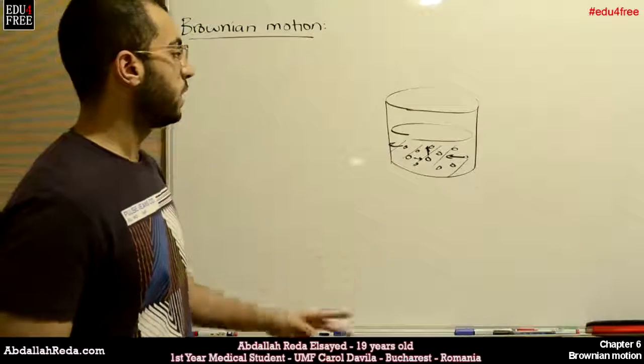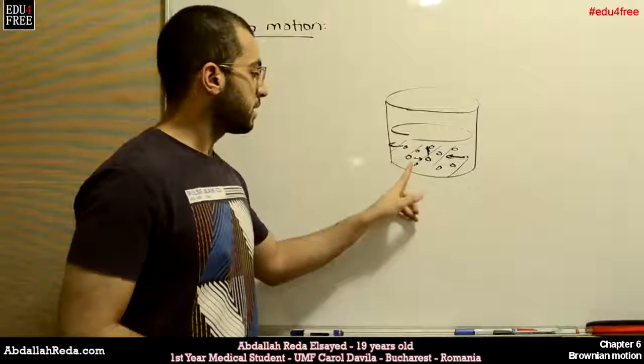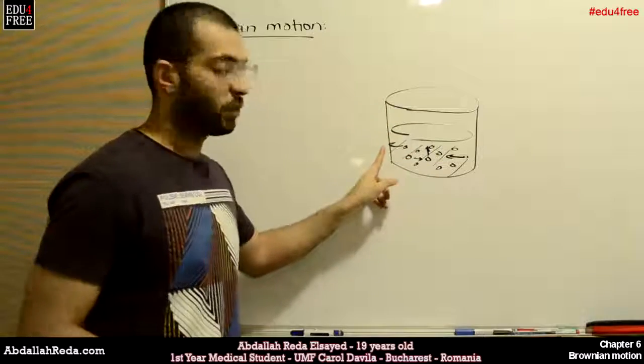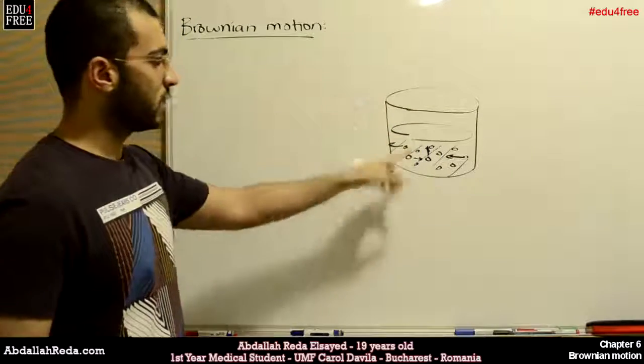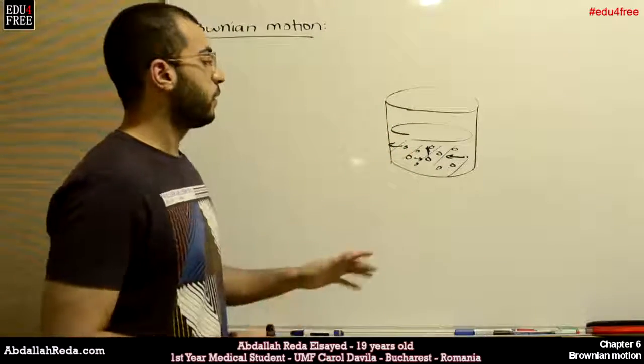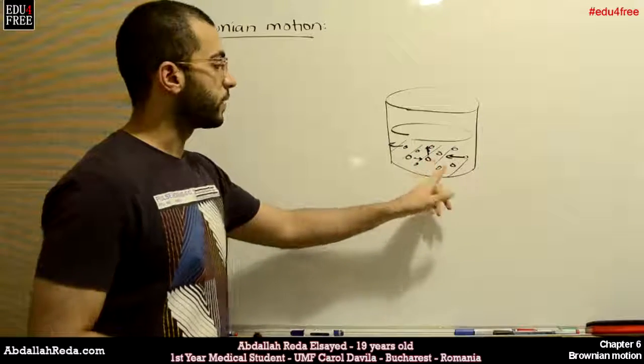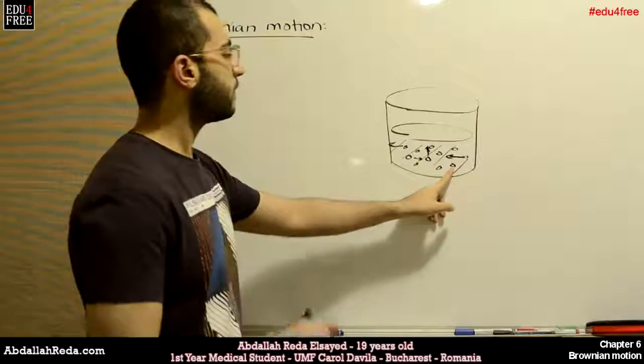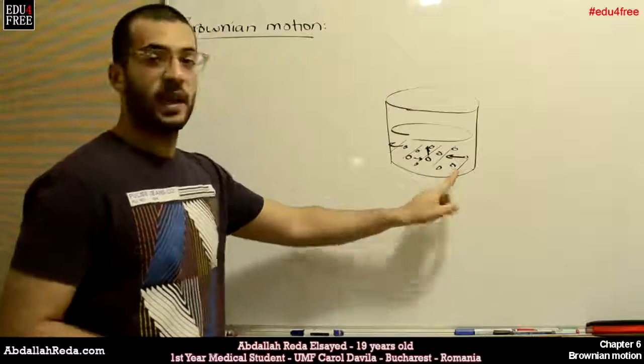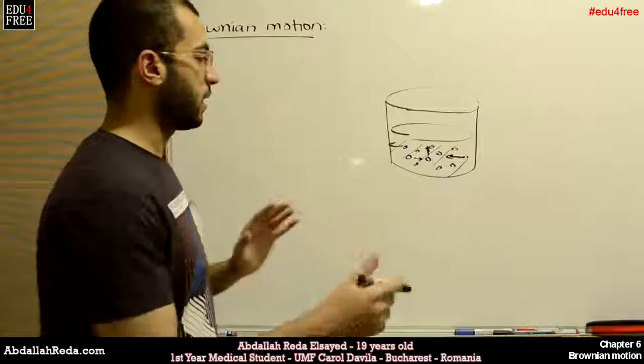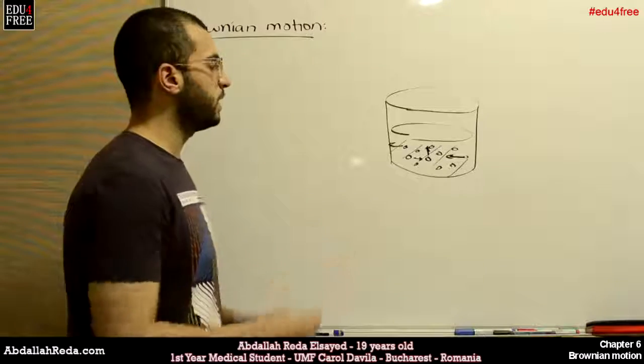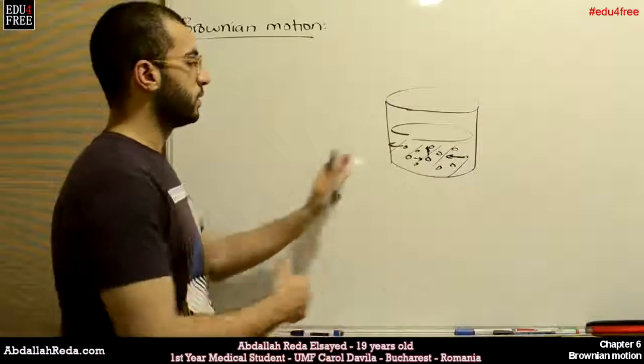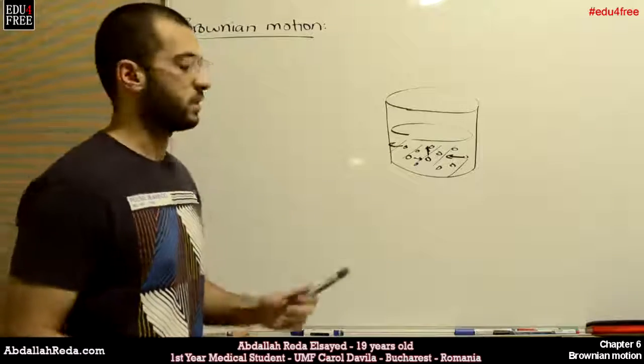The second one is that these gas molecules are going to collide with each other and with the walls of the container, just like the pollen grains. The third postulate is that there are intermolecular spaces between these gas molecules. And these intermolecular spaces are more or less than a constant value depending on the physical conditions and the container that has the gas.